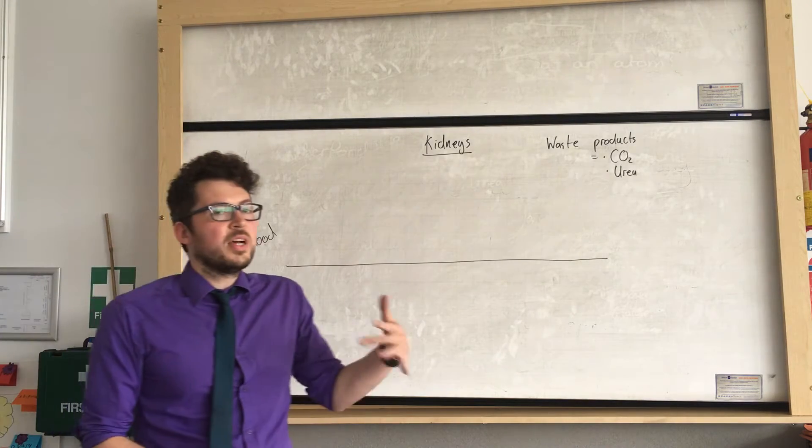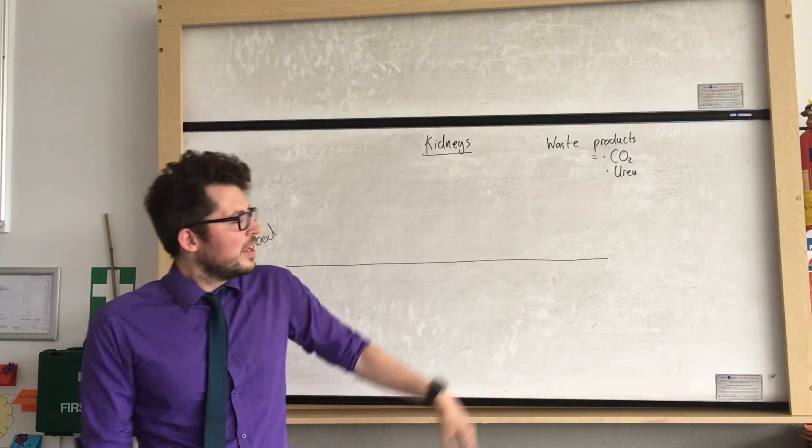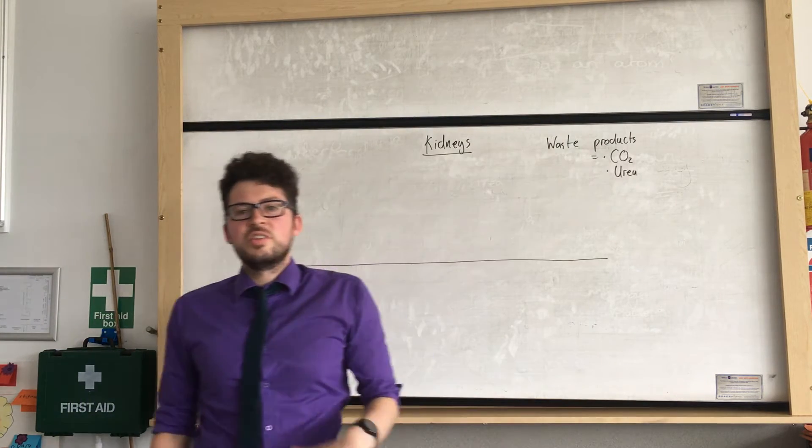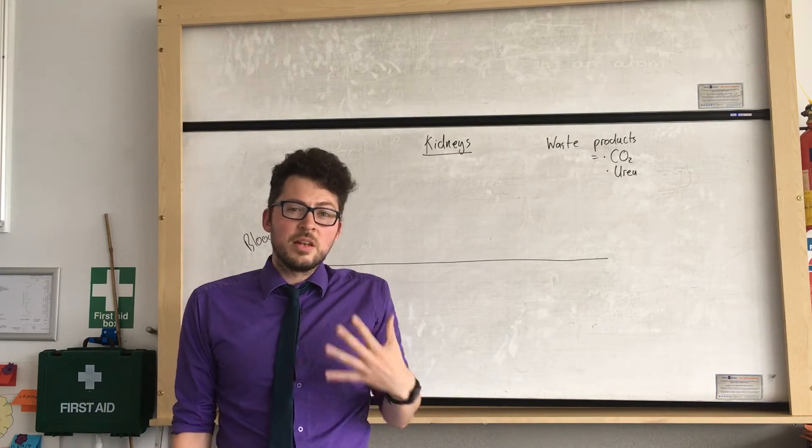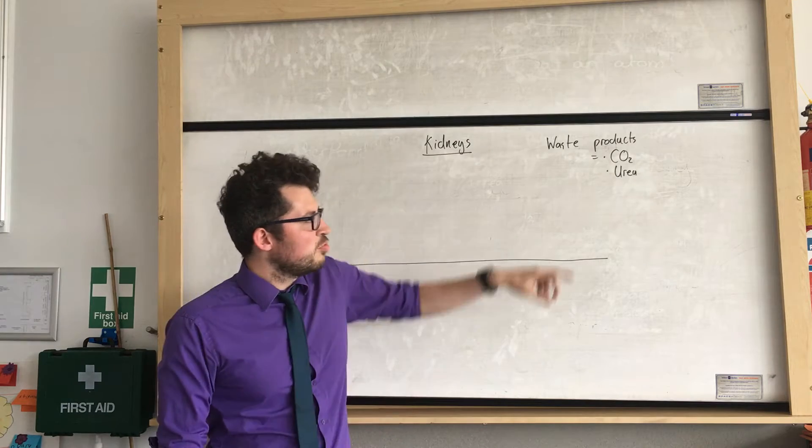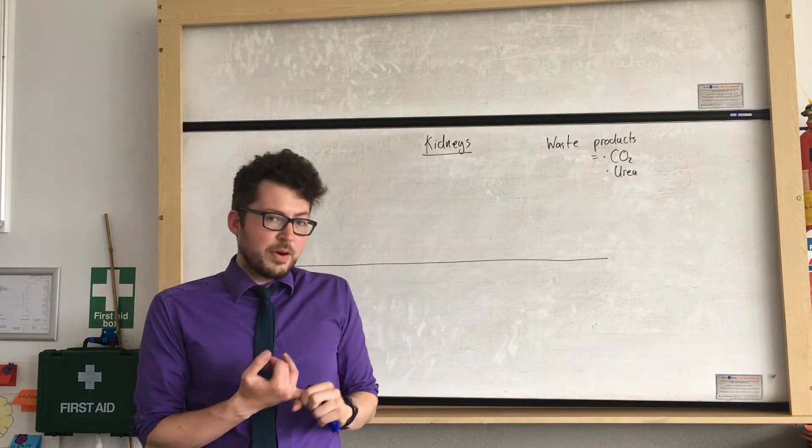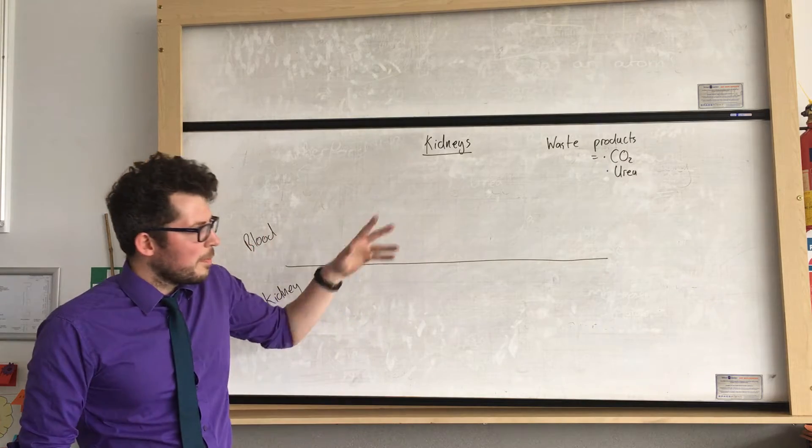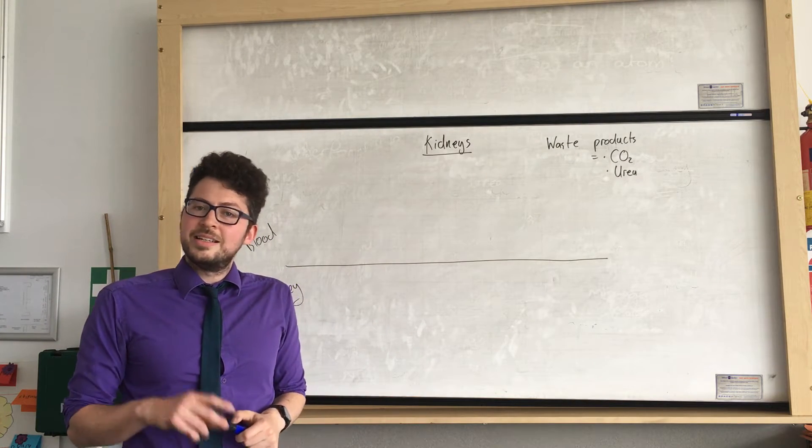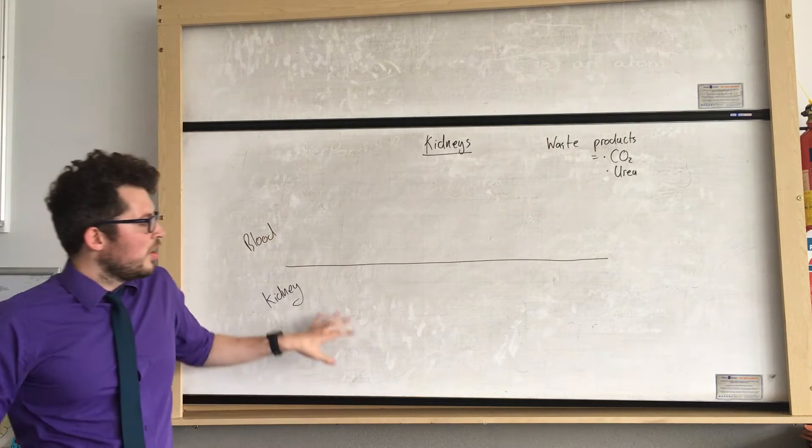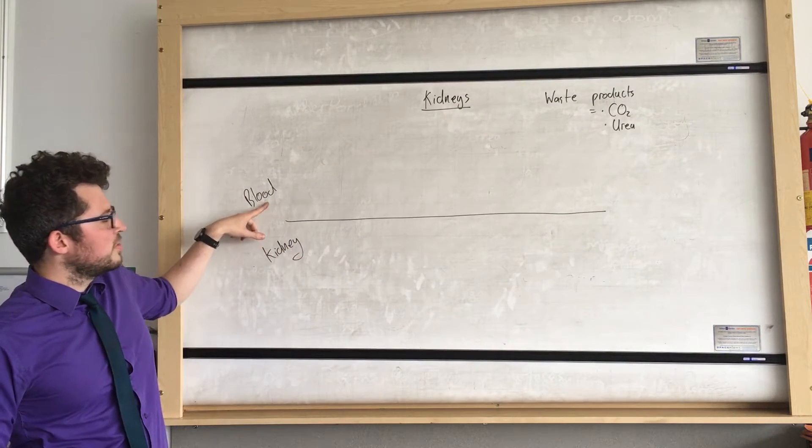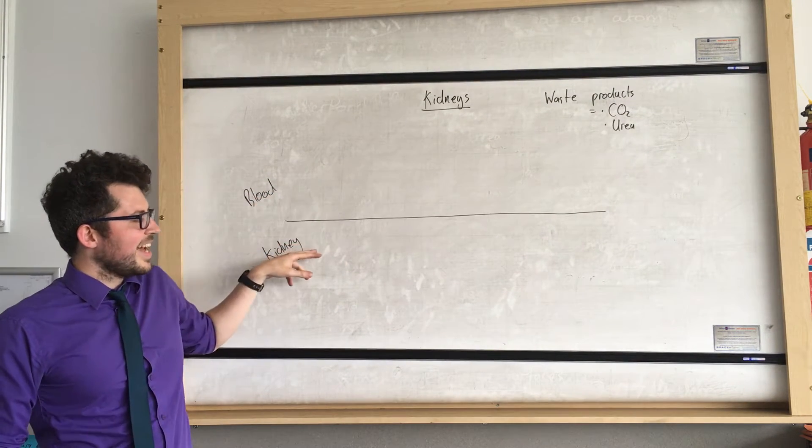Now firstly I'll just touch on a couple of waste products that we've looked at before. Carbon dioxide is a waste product of respiration which is removed by the lungs when we breathe out. Urea is another waste product which is produced when we break down protein and it's removed by the kidneys in this process I'm going to explain now. So this simple diagram here just shows the bloodstream on this side and the kidney here.